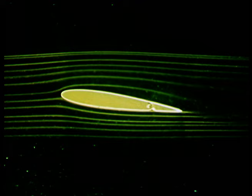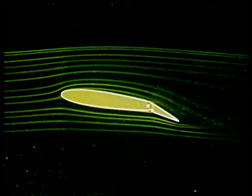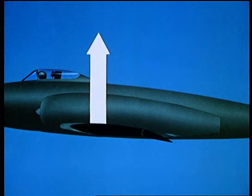At subsonic speeds, a control surface affects the air all round the main surface, as the smoke streamlines show. For instance, moving an aileron affects the pressure distribution round the whole wing.